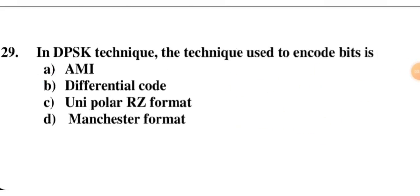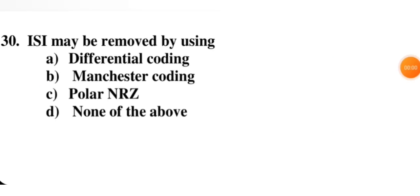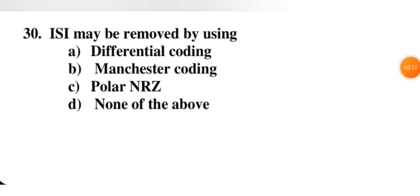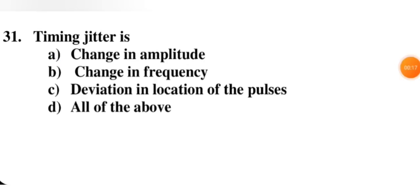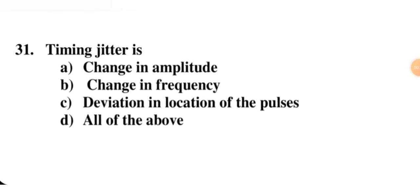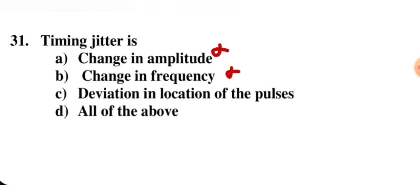In DPSK, the technique used to encode bits is differential coding using a logic circuit. Option B is correct for this. Inter-symbol interference may be removed by using differential encoding — so differential encoding can remove ISI.